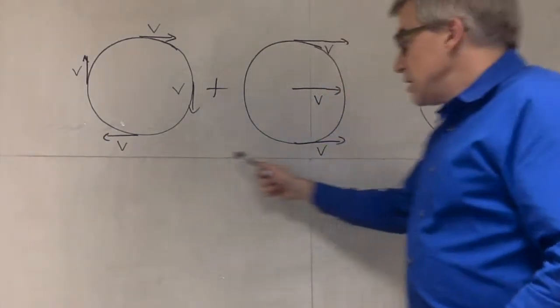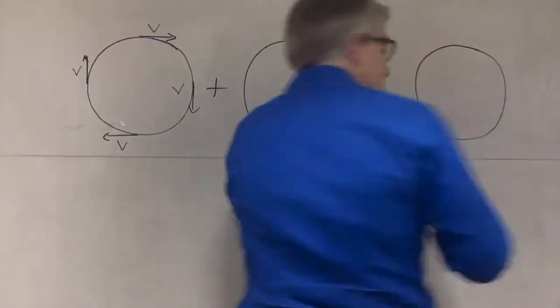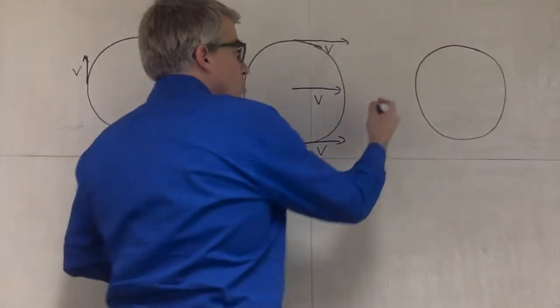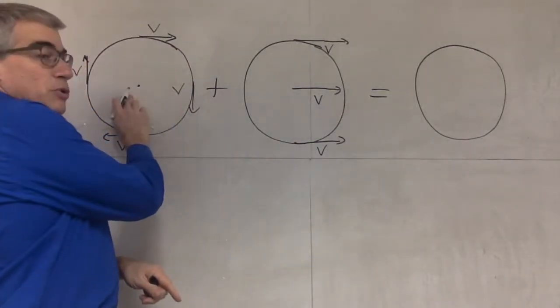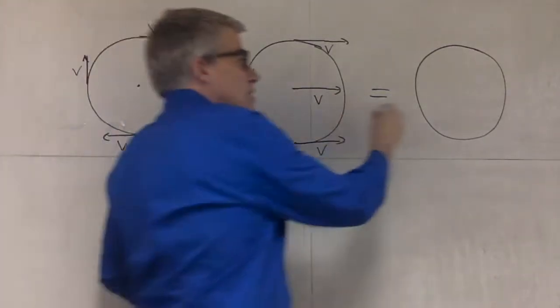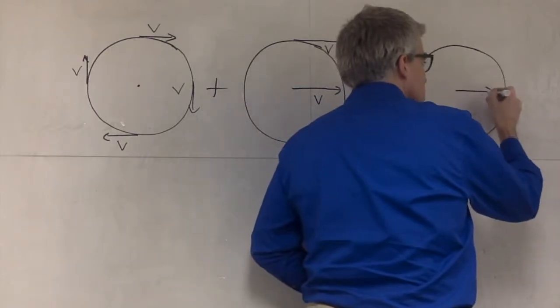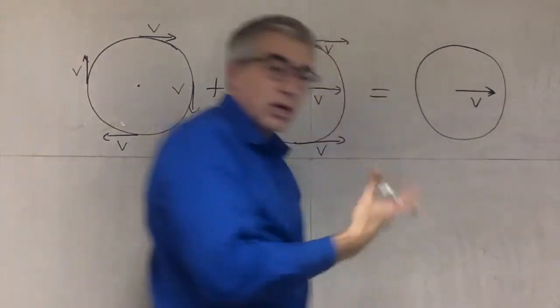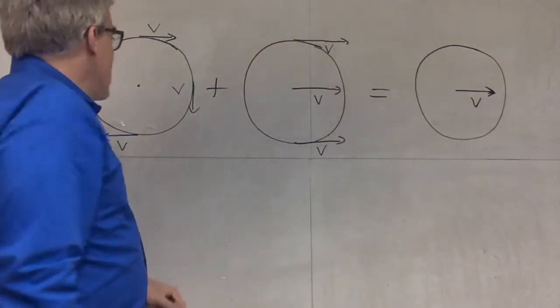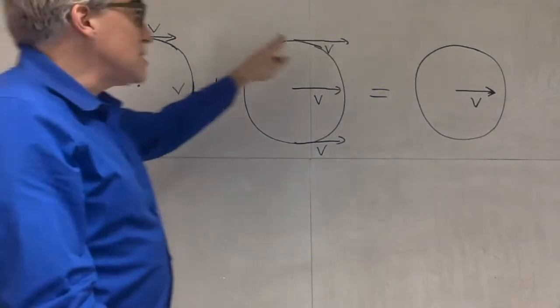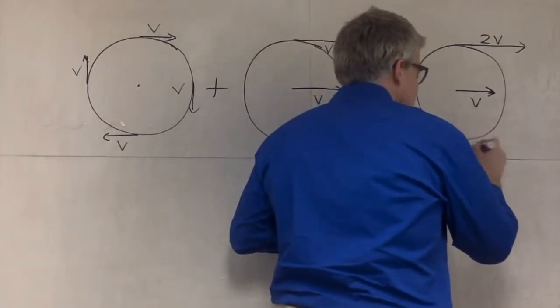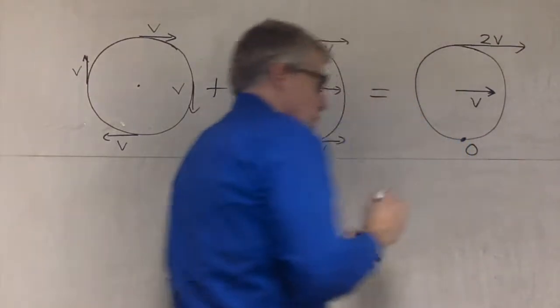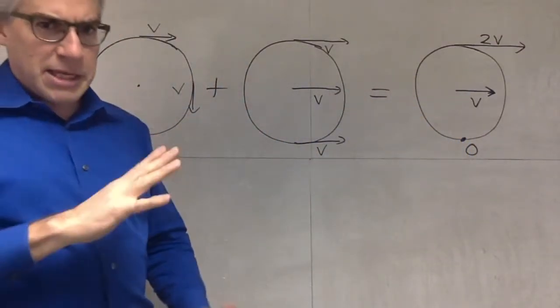Which means this V equals this V, and over here, the total is the axle here has no motion, and we add on V, so the axle is traveling at speed V. That makes sense, it's attached to the car, or whatever. The top of the tire is actually going at 2V, and the bottom of the tire is going at zero.